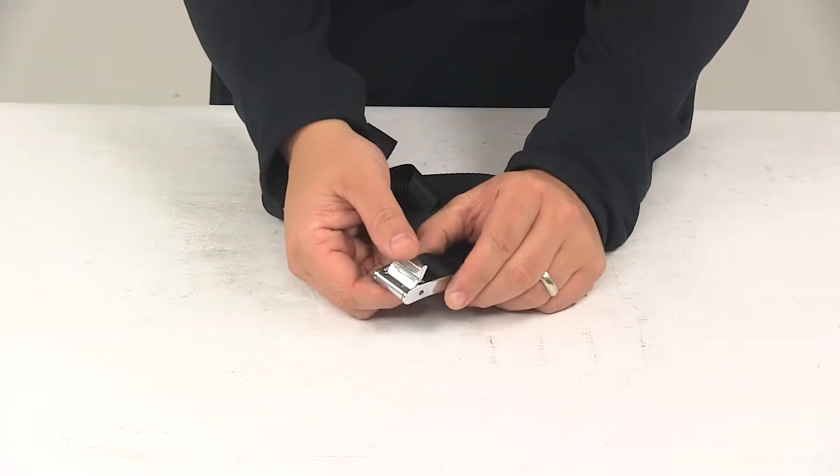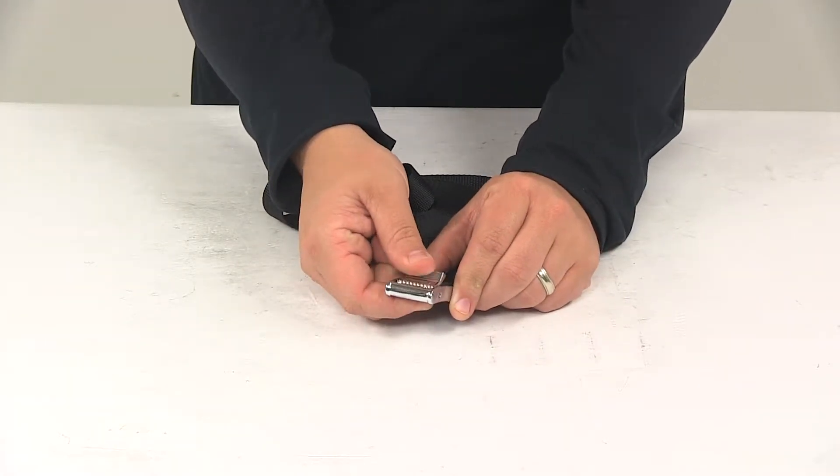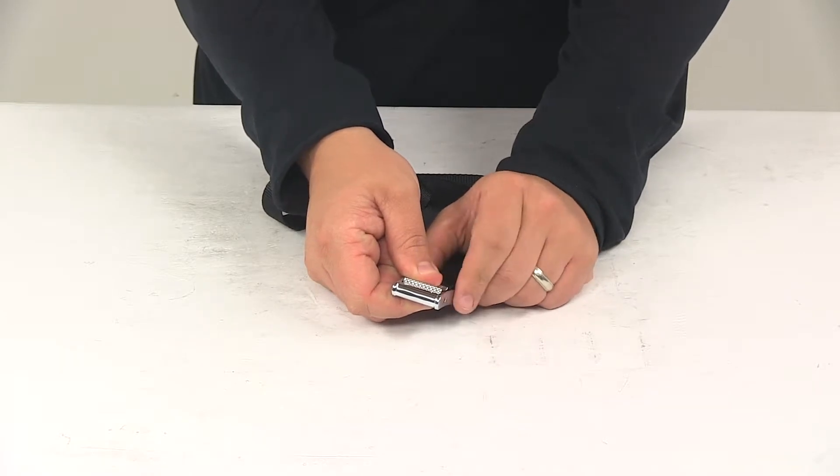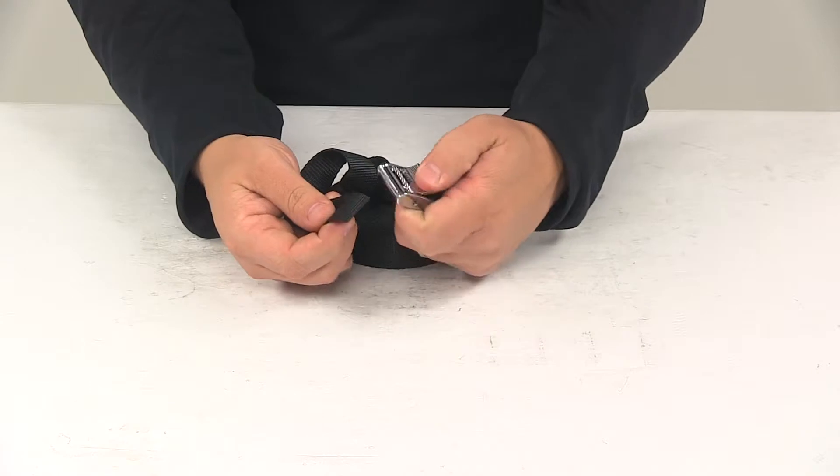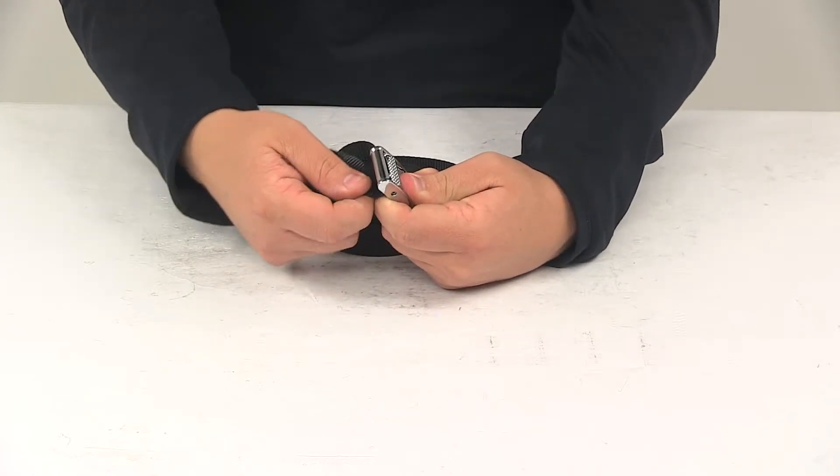This strap features a chrome plated cam lock buckle. This holds the strap tight over your gear. The plain end of the strap feeds through the buckle, just like this.